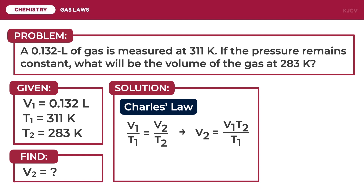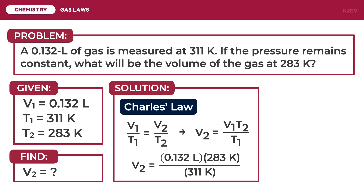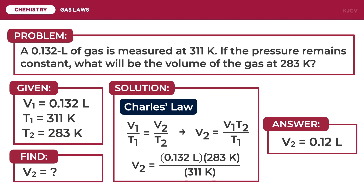Now we can plug in the values. V2 = (0.132 liters × 283 Kelvin) / 311 Kelvin. The unit for temperature cancels. Thus, the final volume — the volume at 283 Kelvin — is 0.12 liters. To verify our answer, we check if our quantities have a direct relationship. Since the volume decreased together with the temperature, the situation follows Charles' law.